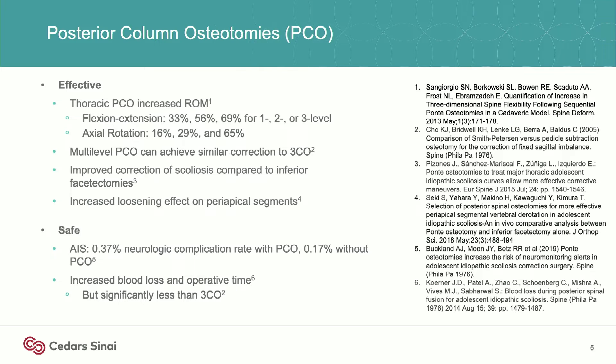They're effective. They increase range of motion. They can achieve similar correction over multiple levels to three-column osteotomies. Compared to just performing inferior facetectomies, you get improved correction in scoliosis, especially at the periapical segments. And they're relatively safe — in large AIS databases, less than 0.5% neurologic complications in the posterior column osteotomy groups.